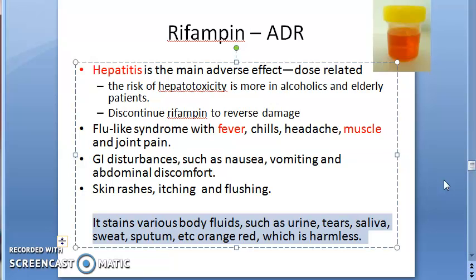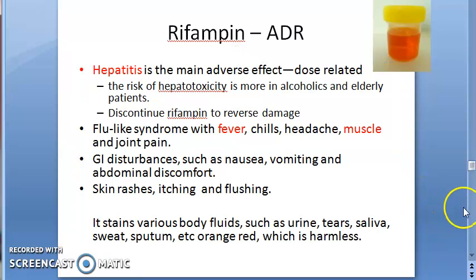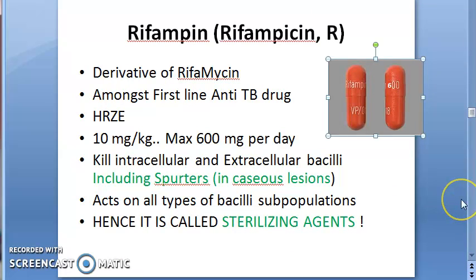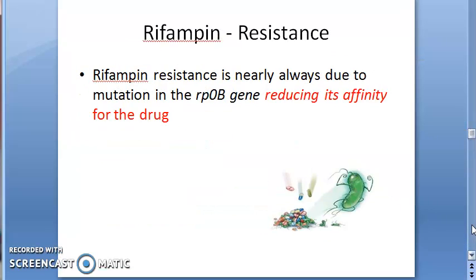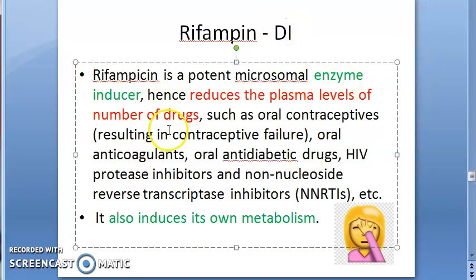The most distinctive adverse effect of Rifampin is that all body fluids turn orange-red — urine, tears, saliva, sweat, and sputum all become red. This is harmless but patients must be warned not to be alarmed by red urine, as it is not blood. This is likely why the orange capsule is used — to signal to the patient not to worry.